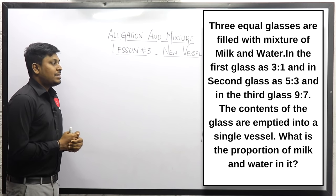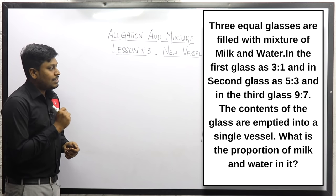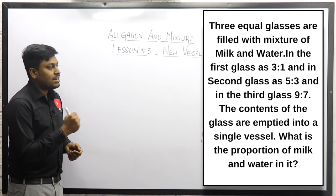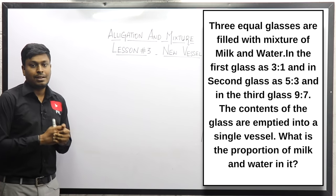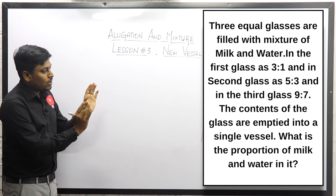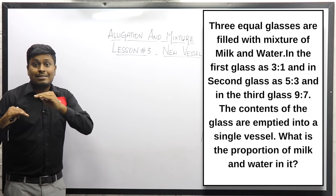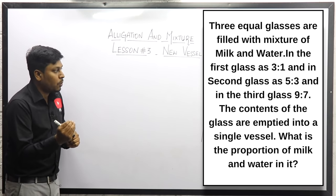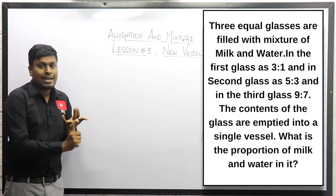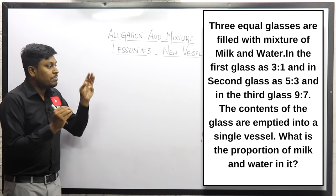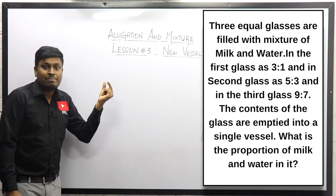Question number one: Three equal glasses are filled with a mixture of milk and water. Glass one has a ratio of 3:1, glass two has 5:3, and glass three has 9:7. The contents of these three glasses are emptied into a new vessel. What is the proportion of milk and water in it? Here, equal glasses means all three have the same volume. Our target is to mix all three and find the ratio of milk and water in the new vessel.